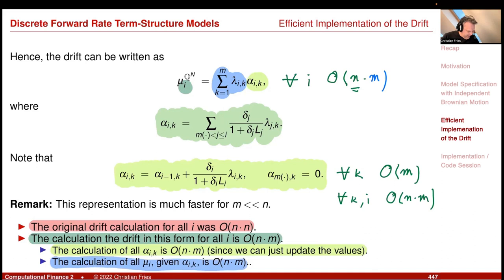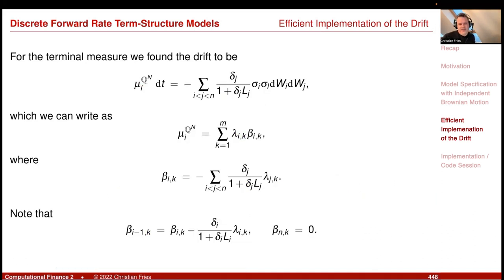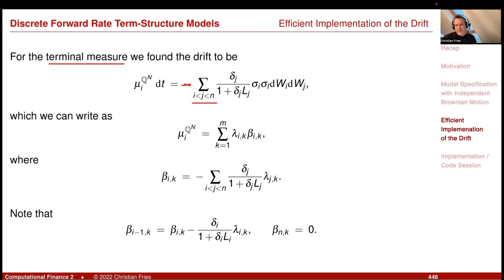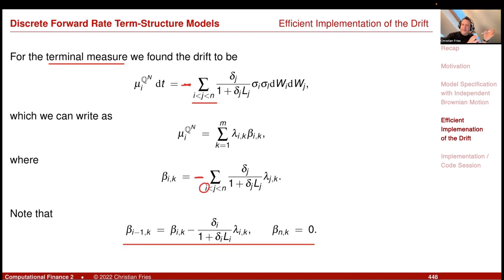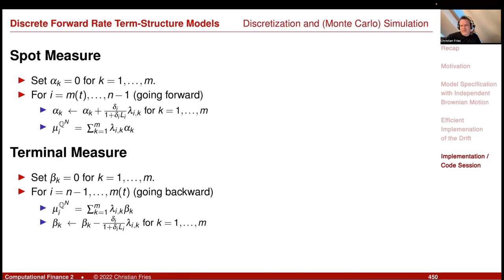We just update the values alpha_ik, which is order n times m, and then calculate the mu_i's using this update rule. For the terminal measure, you can do the same. For the terminal measure, the sum runs from i to n instead of from m(t) to i, so the sum runs in a different order and there is a minus sign. Because the sum runs in a different order, i is now the starting point rather than the endpoint, so the update rule goes backward. In summary, you have these efficient algorithms that calculate the drift very efficiently.